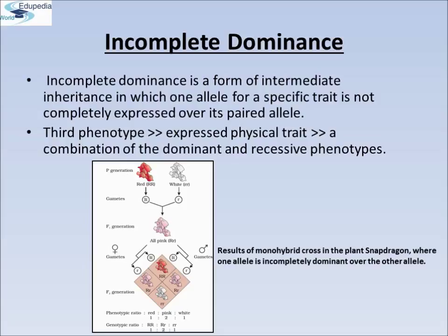The inheritance of flower color in snapdragon is a good example to understand incomplete dominance. Here you can see a monohybrid cross between a red flower carrying homozygous capital RR genotype and a white flower carrying homozygous small rr genotype were crossed. When the F1 progeny was produced, those F1 progenies are all pink in color, and they are heterozygous capital R, small r in nature.